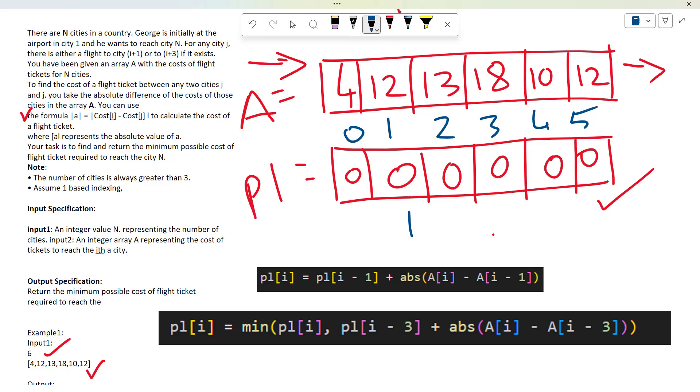For every city, I can check the price using this formula: p[i] = p[i-1] + abs(A[i] - A[i-1]). This gives the separation between two previous cities. If I'm at the first place, currently A[i] is 12.